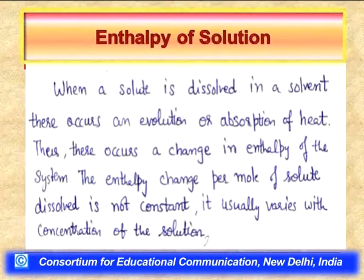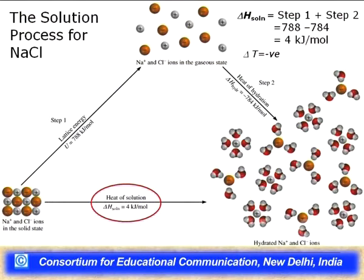On the other hand, when the endothermic step dominates — that is, when the lattice energy of a substance is greater than the hydration energy of the corresponding ions — the temperature of the system decreases. For sodium chloride, the lattice energy is 788 kJ/mol and the hydration energy is 784 kJ/mol, so the net energy required for dissolution is 4 kJ/mol.